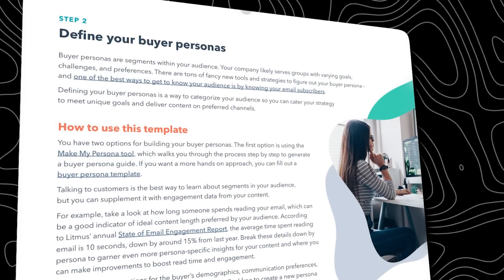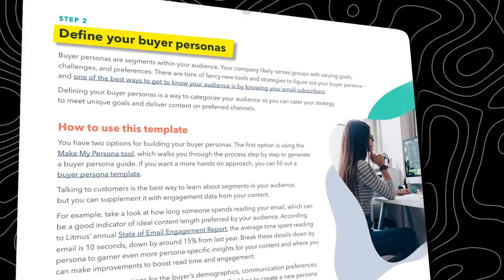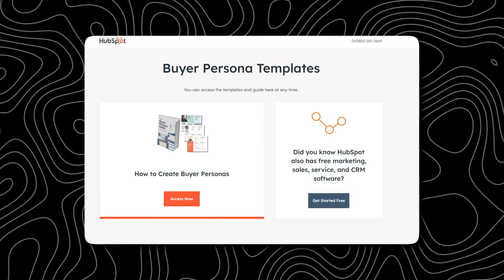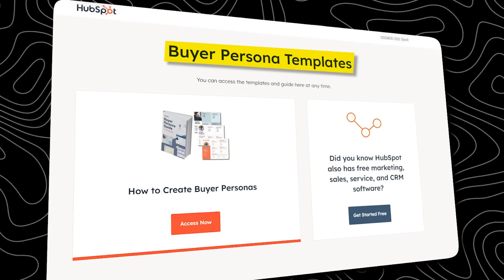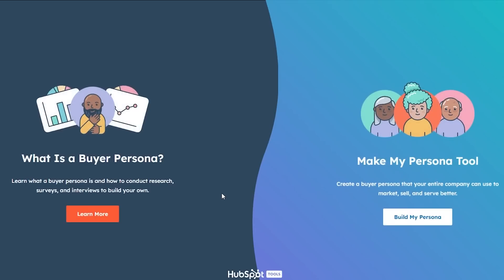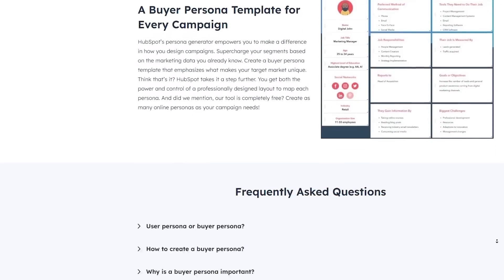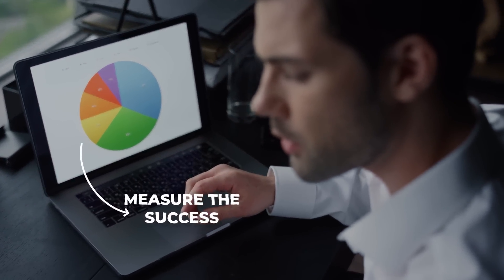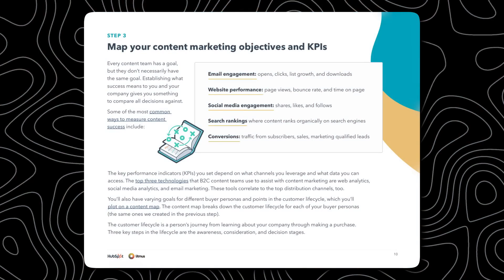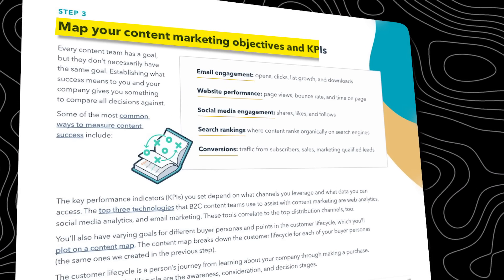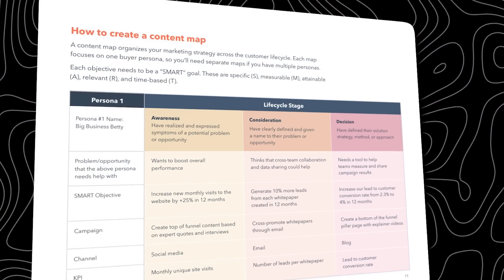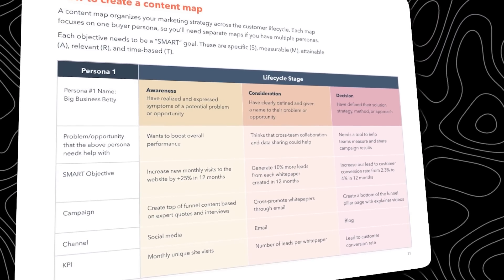You'll also see a practical example of how to turn a SWOT analysis into actionable steps. Then you move on to defining your buyer persona — missing this step could make your website and business fail early. HubSpot provides a template and a tool to build the persona in just a couple of minutes. Next, you define your goals to measure the success of your content marketing plan, mapping content with your objectives and KPIs.